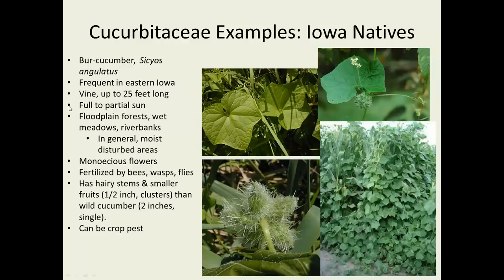Iowa natives: we have the burr cucumber, Sicyos angulatus. This is quite common in Eastern Iowa, though I've seen it in Central Iowa too. It's a vine up to 25 feet long, with tiny flowers. It likes wet conditions — think riverbanks and floodplain forests. It has monoecious flowers, meaning male and female are separate but on the same plant. It has hairy stems and produces little burr-like fruits about half to three-quarters of an inch long, which is different from the wild cucumber, which has bigger single fruits and smooth stems.